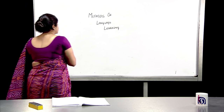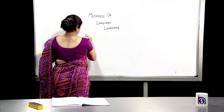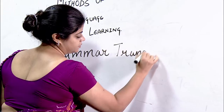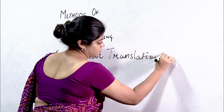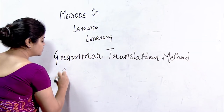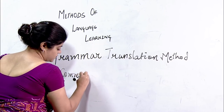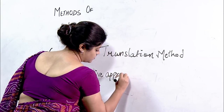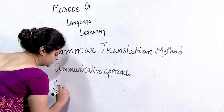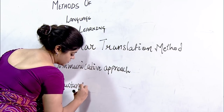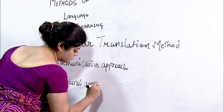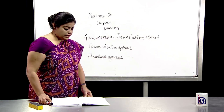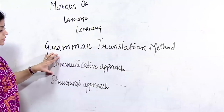When we are dealing with methods of language learning, there are basically three approaches that we follow: one is the grammar translation method, another is the communicative approach. As we move forward, we'll be focusing more on the communicative approach today, and later deal with the structural and grammar translation methods.